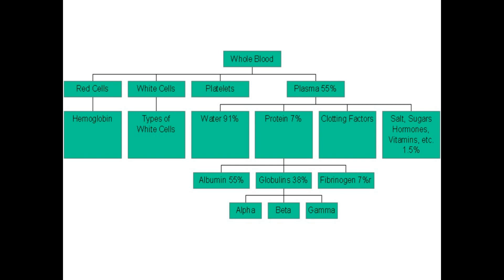There are three major types of plasma proteins: albumin, globulin, and fibrinogen. Globulins are further divided into alpha globulin, beta globulin, and gamma globulin. Plasma also contains clotting factors, as well as salts, sugars, hormones, vitamins, and other substances — approximately 1.5% of plasma.